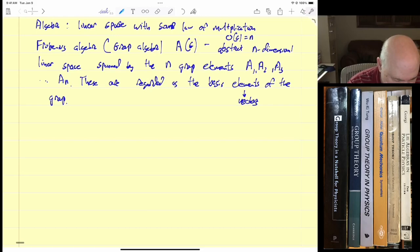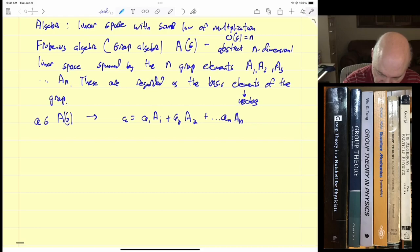Basically, if we have an element of the group algebra, small a, then this implies that A can be written as A1 times A1 plus A2 times A2 plus dot dot dot An times An, where each Ai is an element of the field that we're using. We're always going to use complex numbers in physics, so we're just going to say that each Ai is an element of C, complex numbers.